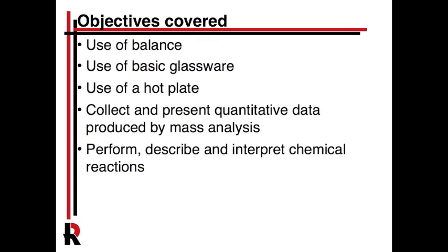In terms of objectives, this will cover use of the balance, glassware, and a hot plate. It's a quantitative lab, but most importantly it also covers interpreting chemical reactions. You're going to need to be very careful in your experimental recordings — if you see color changes, things going from colorless to cloudy to clear or vice versa, smells, bubbles — these are all observables.